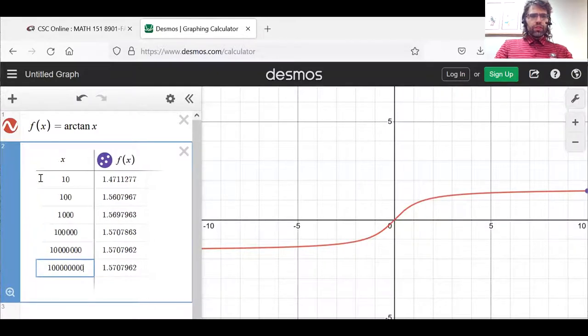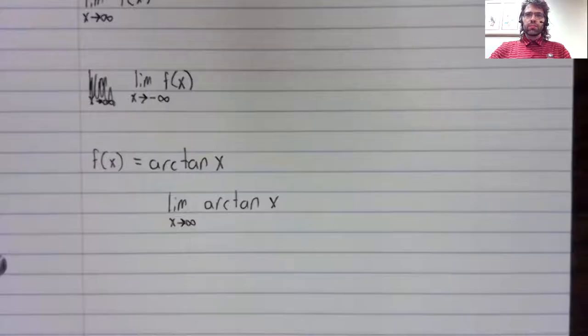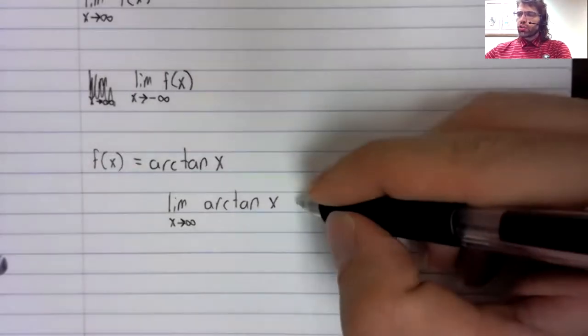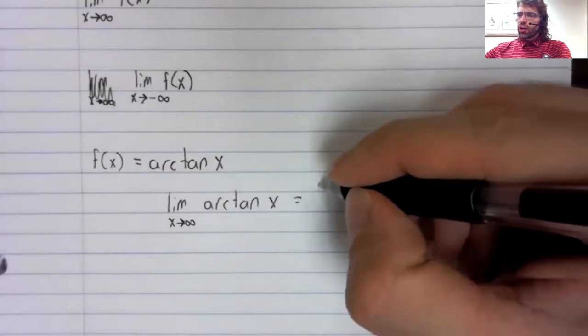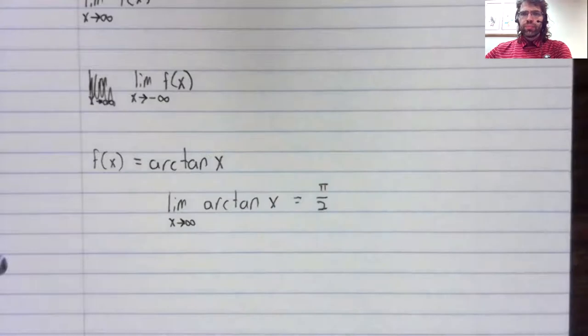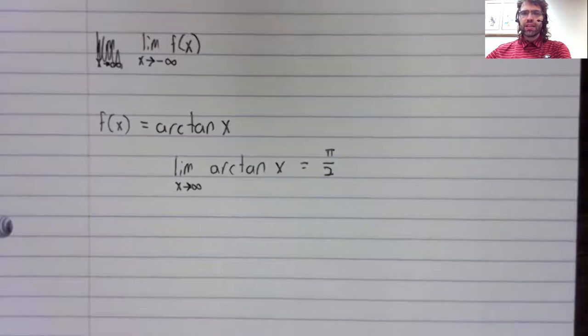Well, it looks like the arc tangent is approaching 1.57 something. I can be a little more specific than that. As x is getting larger and larger, the arc tangent of x is approaching π divided by 2.